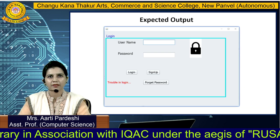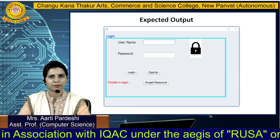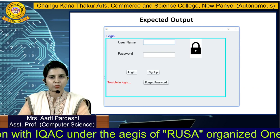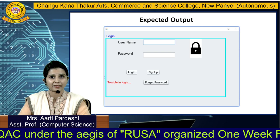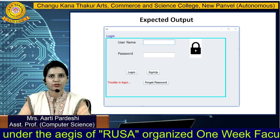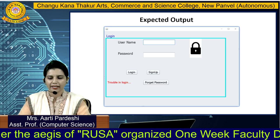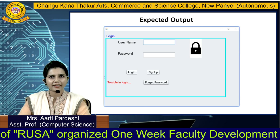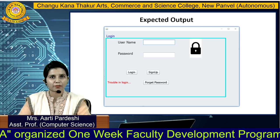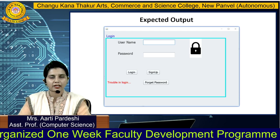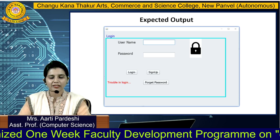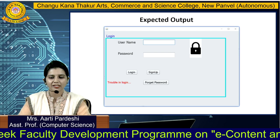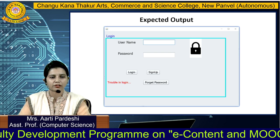You are able to see some GUI components are there: Username, Password, and some buttons — that is Login, then Sign Up, Forgot Password, and in red color you are able to see 'Trouble in Login'. And on the right-hand side, you are able to see one image there, which is an icon representing a lock.